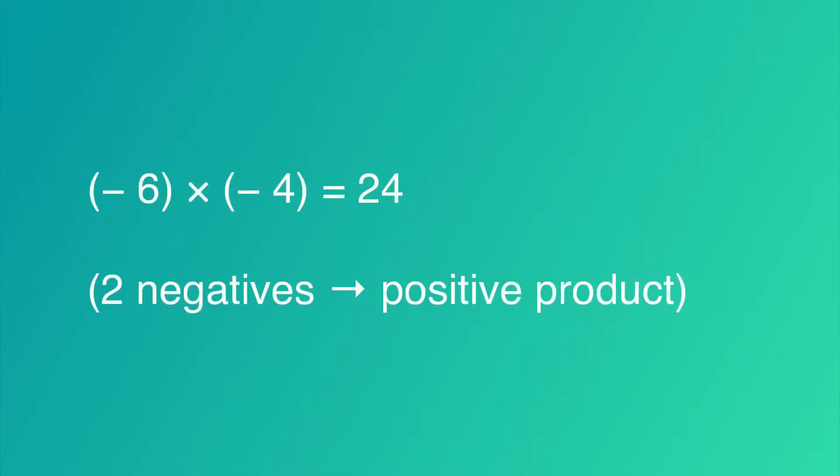Take for example, negative 6 times negative 4, which equals 24. There are two negatives, which makes this a positive product.